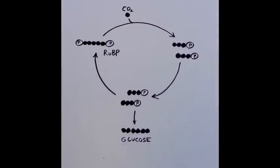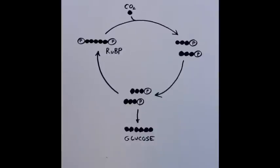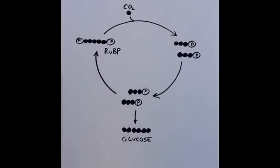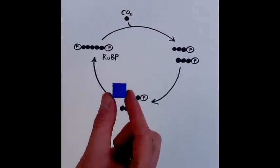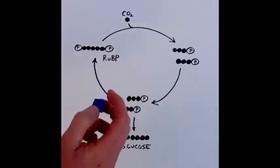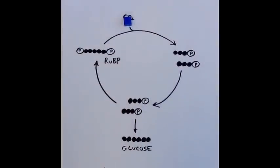So this is a drawing of the Calvin cycle. But it's a little hard to visualize exactly what's going on with just these little drawings here. So we're going to use these Lego bricks to represent carbon. Here's one carbon, and we can use that to be our carbon dioxide.